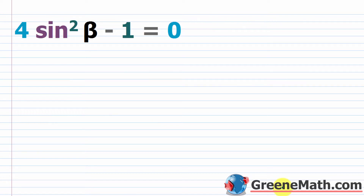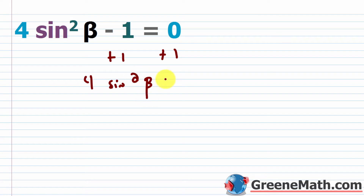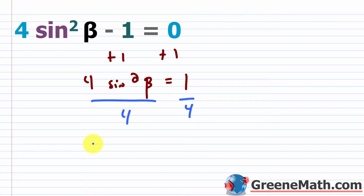Let's start with 4 times sine squared beta minus 1 equals 0. Just like we've been doing before, we're going to add 1 to both sides of the equation to get 4 times sine squared beta is equal to 1. We're always trying to isolate the trigonometric expression, so we want sine of beta by itself. We divide both sides by 4, giving us sine squared beta equals 1/4.